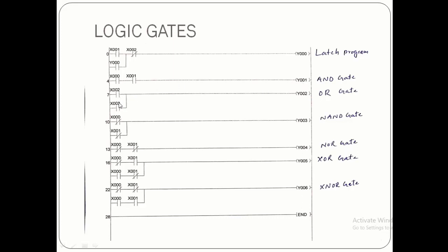For the NOR gate, when both inputs are turned off the output will be 1. For the OR gate when one input is on the output is 1; for the NOR gate when one input is on the output will be 0. In ladder logic, for the OR gate both inputs are in parallel normally open, and for the NOR gate both inputs are in series normally closed. For the AND gate both inputs are in series normally open, and for the NAND gate both inputs are in parallel normally closed.